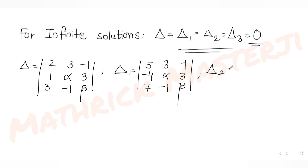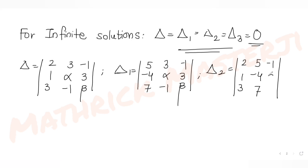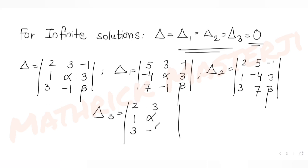For delta 2, you replace the y-coefficients column with the constants 5, -4, 7, keeping the other columns as [2, 1, 3] and [-1, 3, β]. For delta 3, you keep the first two columns as [2, 1, 3] and [3, α, -1], and replace the z-coefficients column with the constants 5, -4, 7.